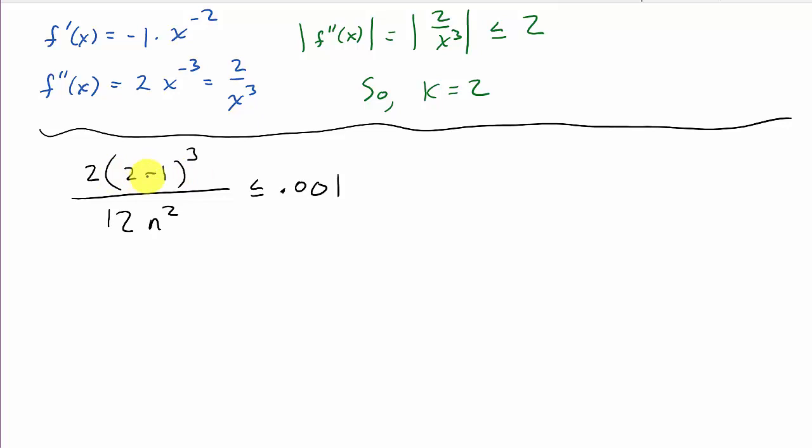So, now, we need to solve this for n. So, this right here, that's one. One times two, that's two over 12n squared is less than or equal to 0.001. So, that's one over 6n squared is less than or equal to 0.001. So, what's going to happen? I'll move the n squared up here.